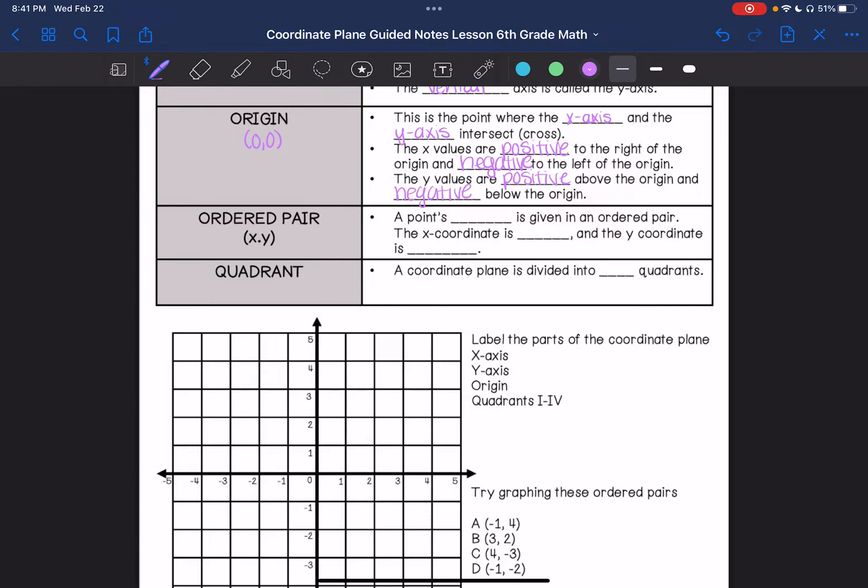An ordered pair is a point's location on the coordinate plane. When you see an ordered pair, the x is the first number and the y is the second number.